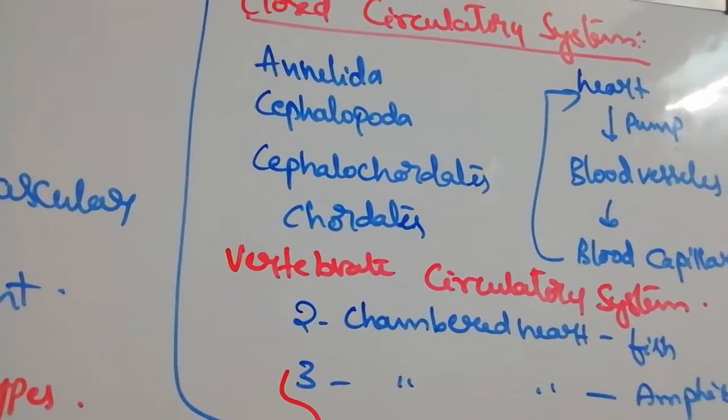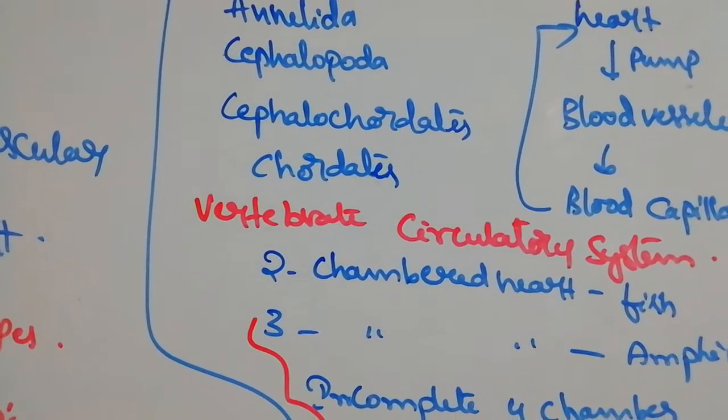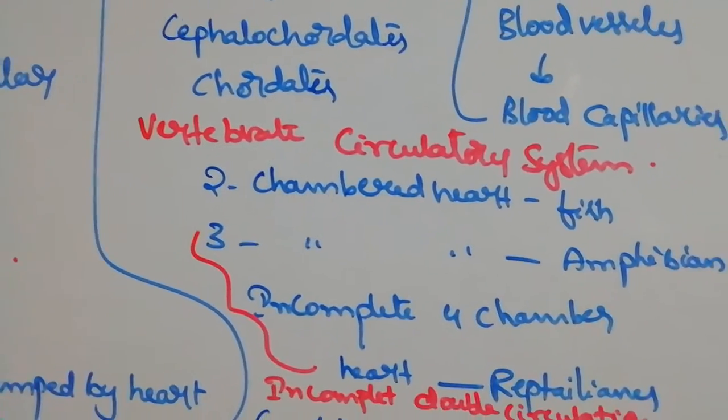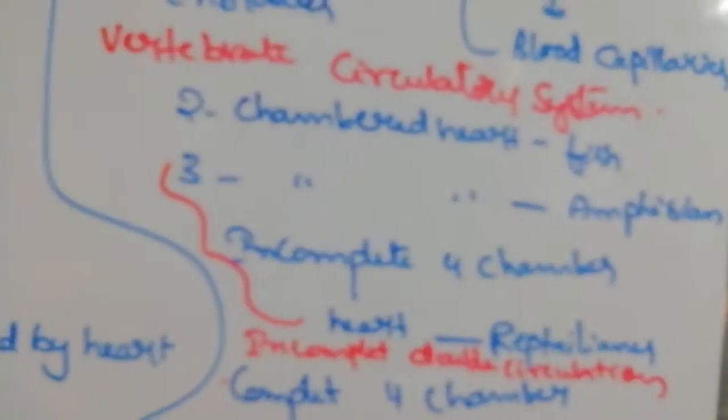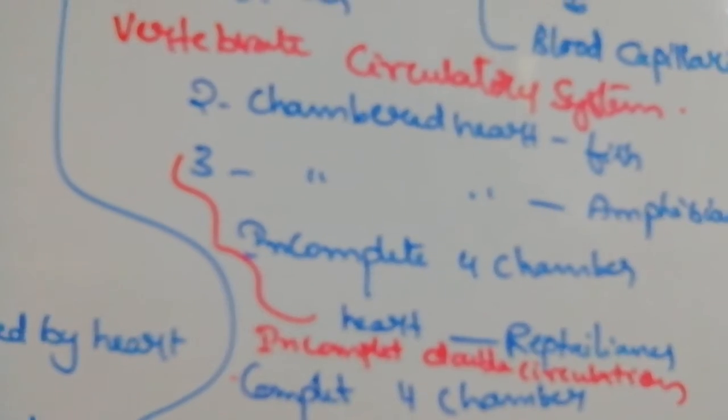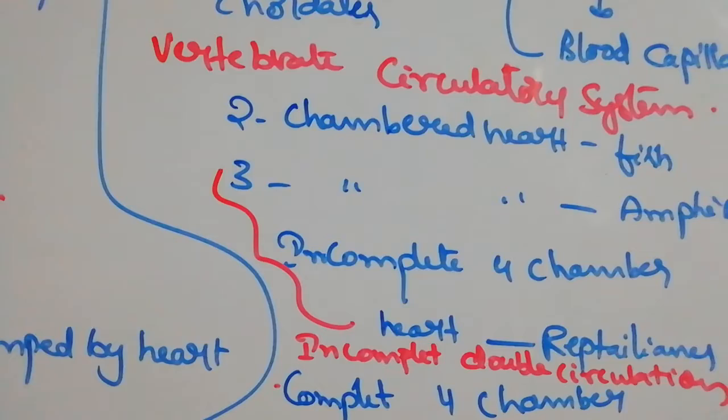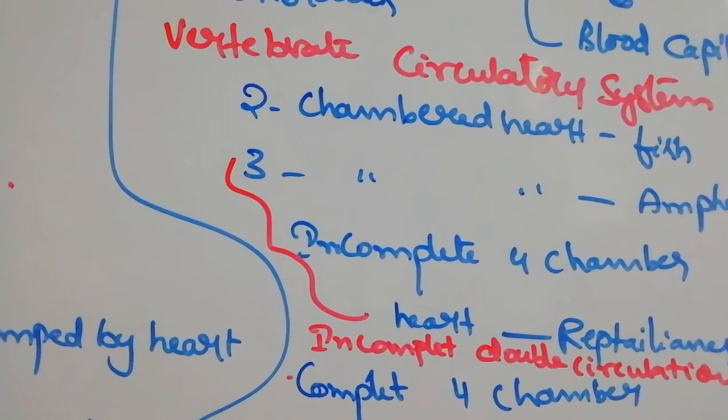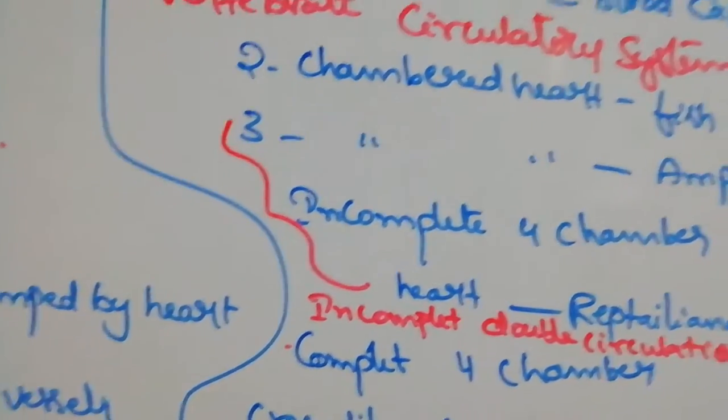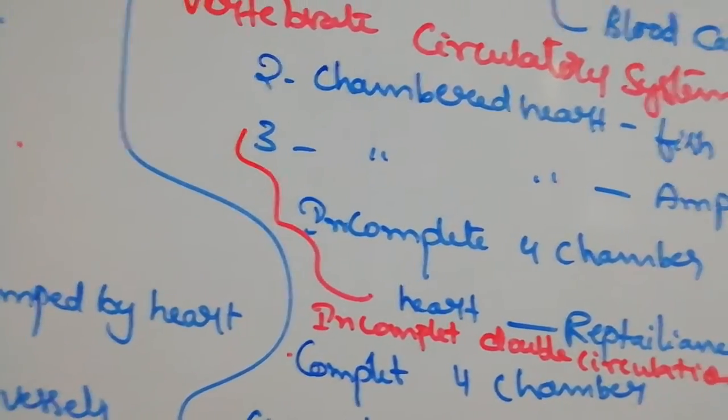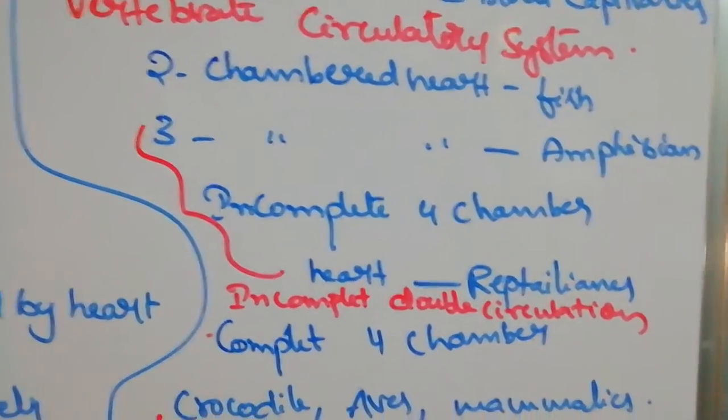Closed type circulatory system is found in Annelida, cephalopods, cephalochordates, and chordates. Now come to vertebrate circulatory system. Two-chambered heart is present in fishes. That's why fish heart is called venous heart or branchial heart, because it collects blood from veins and reaches the heart, then from heart it reaches the gills.